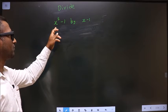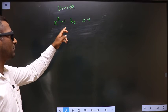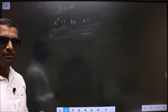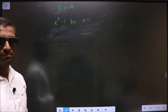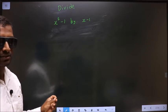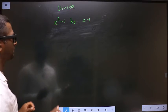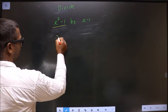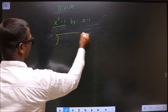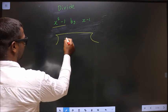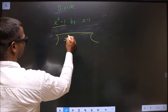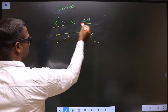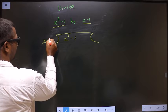Divide x power 5 minus 1 by x minus 1. While dividing polynomials, first we write it in this way. x power 5 minus 1 is the dividend, we write here. x minus 1 is the divisor, we write here.